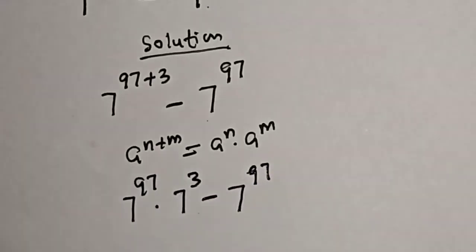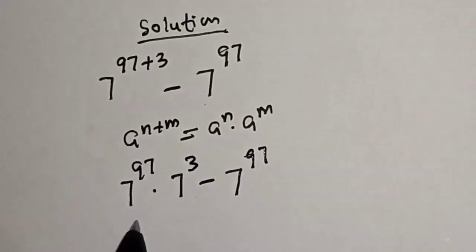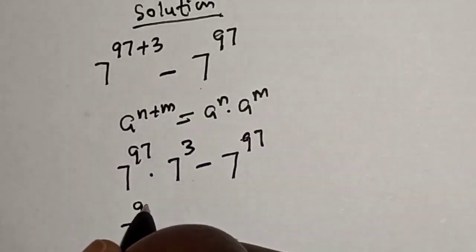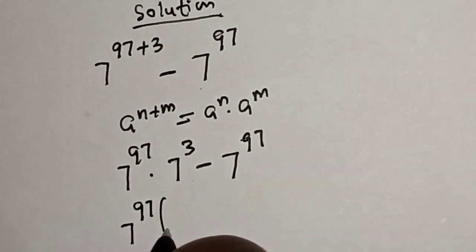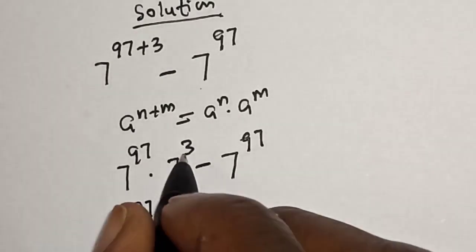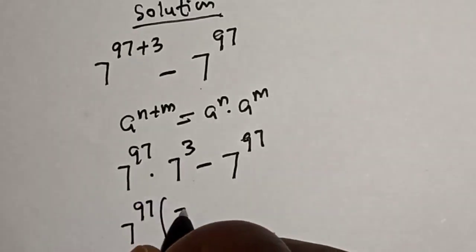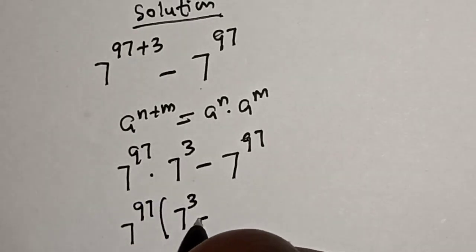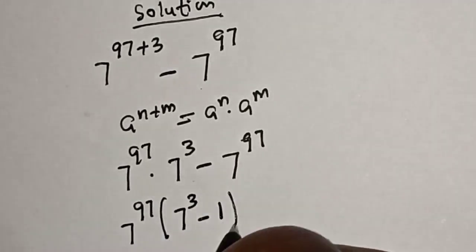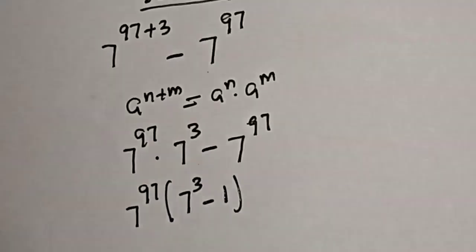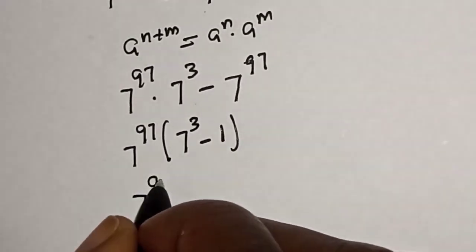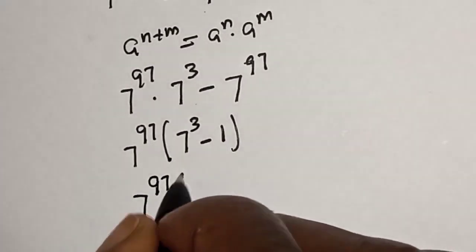Now 7 raised to power 97 is common — let's factor it out. We get 7 raised to power 97 multiplied by the quantity: 7 raised to power 3 minus 1.